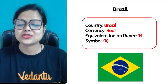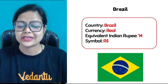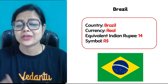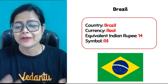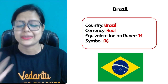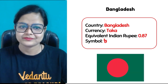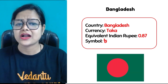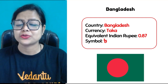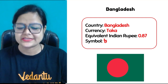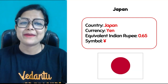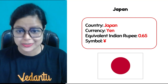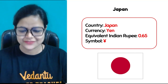If I talk about Brazil, the currency is Real, and the equivalent is 14 Indian rupees, which means our 14 rupees are equal to 1 Real. The currency of Bangladesh is Taka, and the equivalent is 0.87 Indian rupees. And Japan's currency is Yen, and the equivalent is 0.65 Indian rupees.